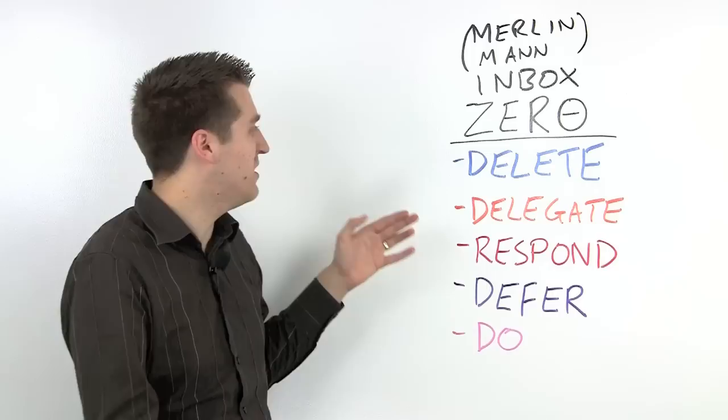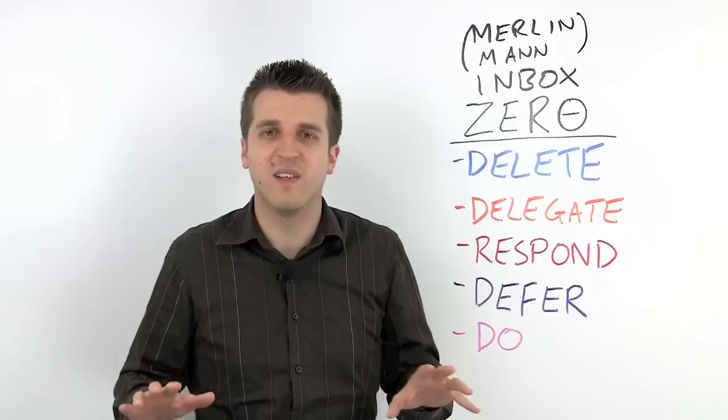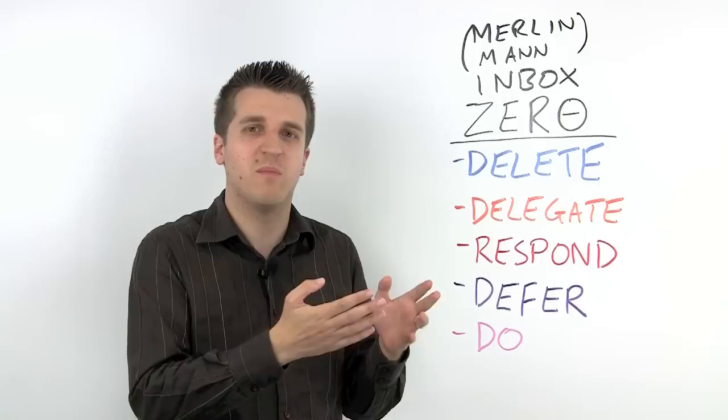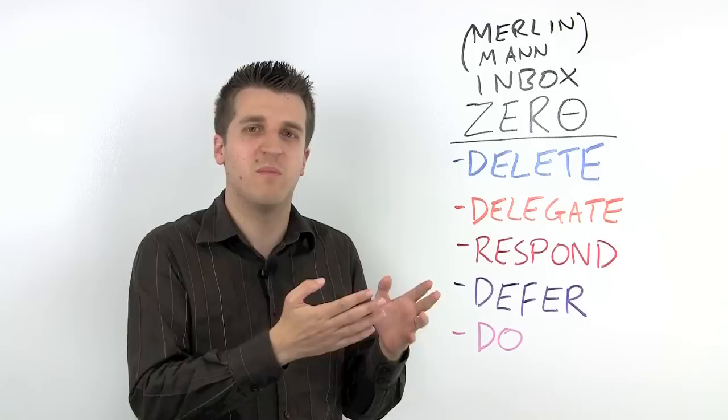Let's take a look at these five different methods that Merlin suggests. The first is to delete anything that's non-essential or to archive things that needed to be read once, but then can be put away somewhere else for when you need them. That's the simplest option really and that helps cut down on a lot of clutter.